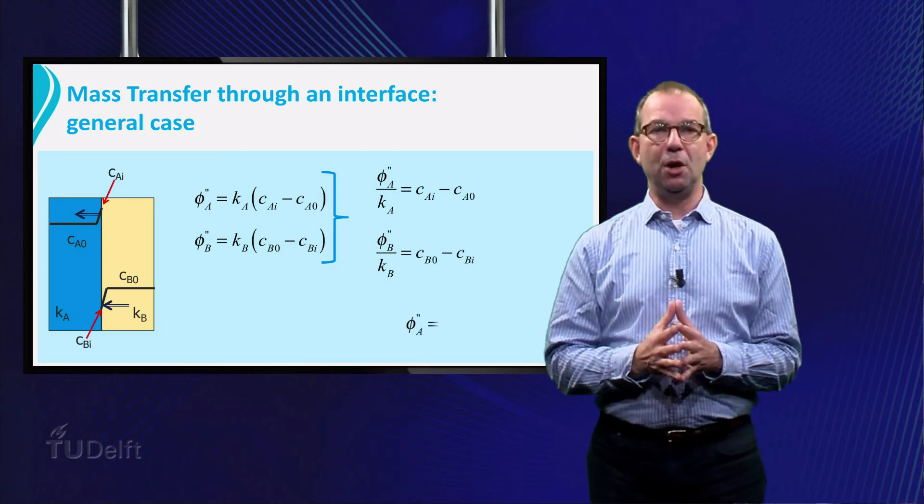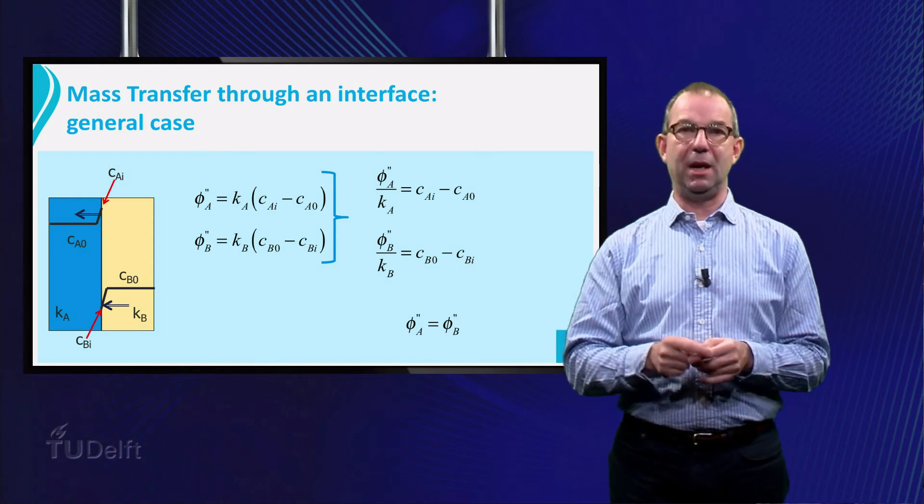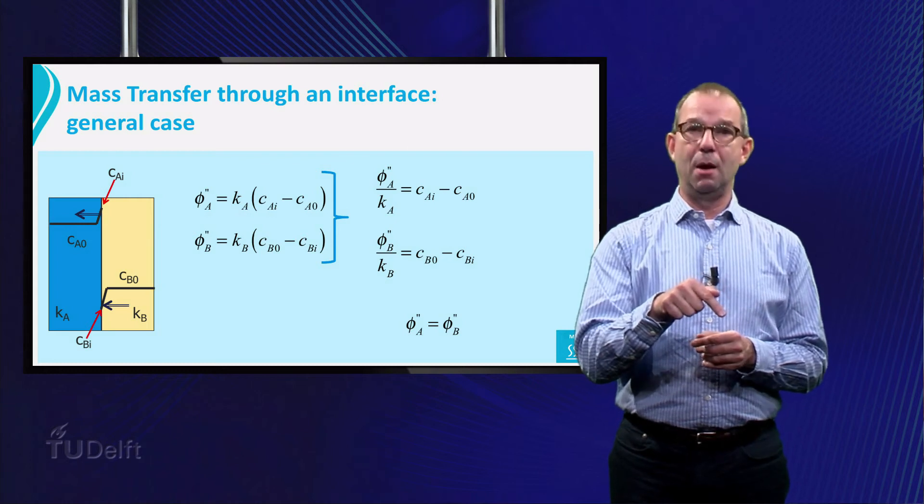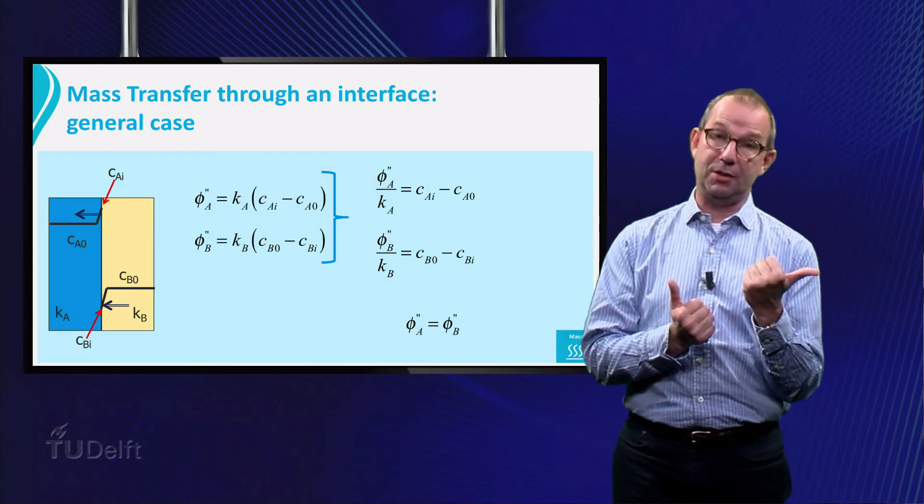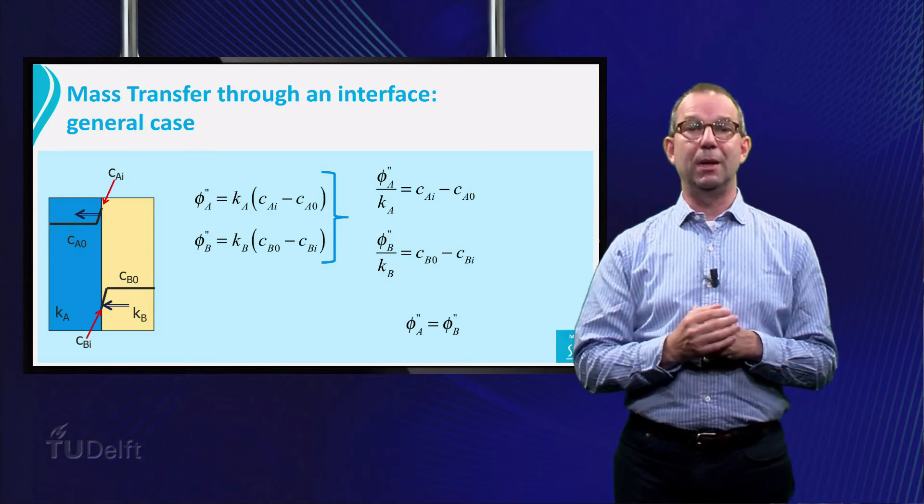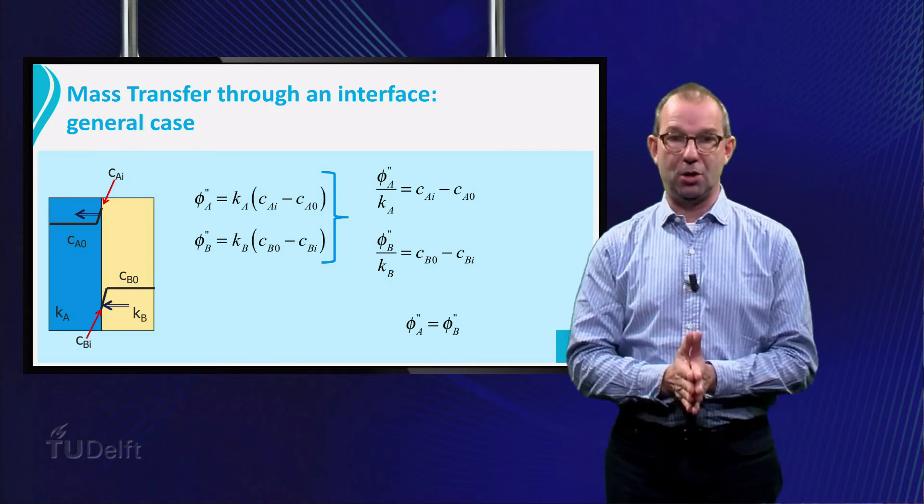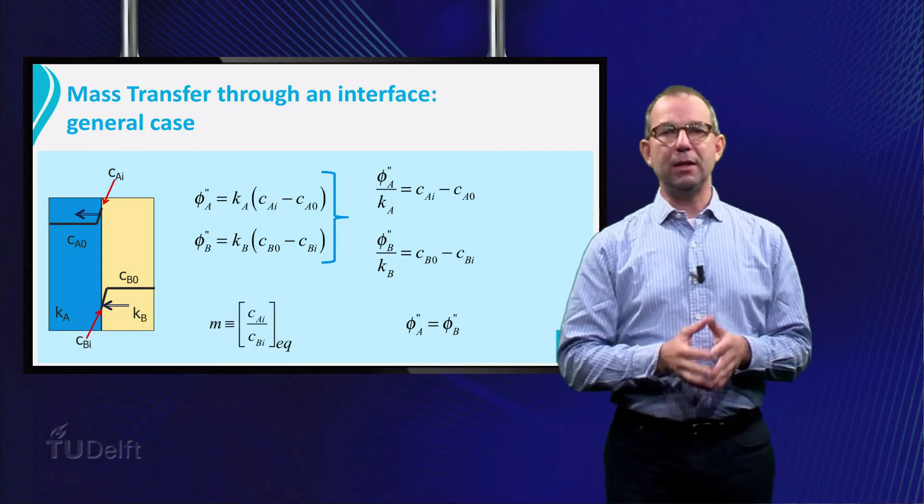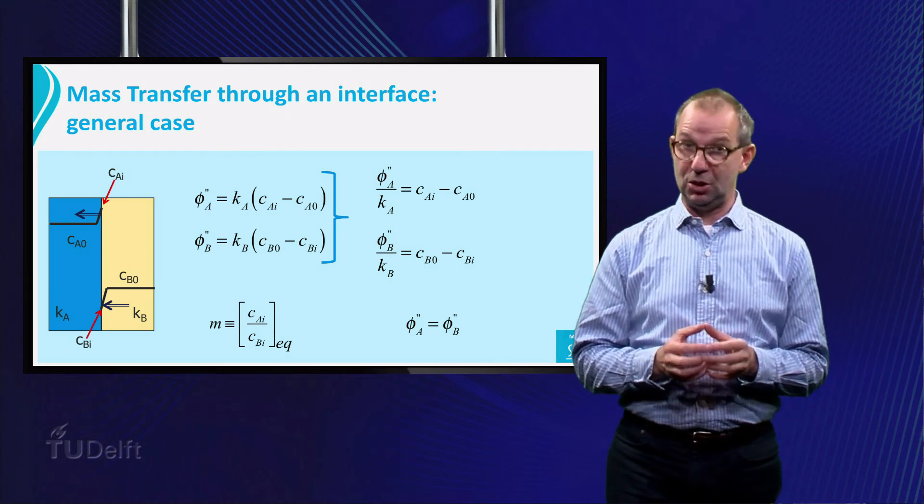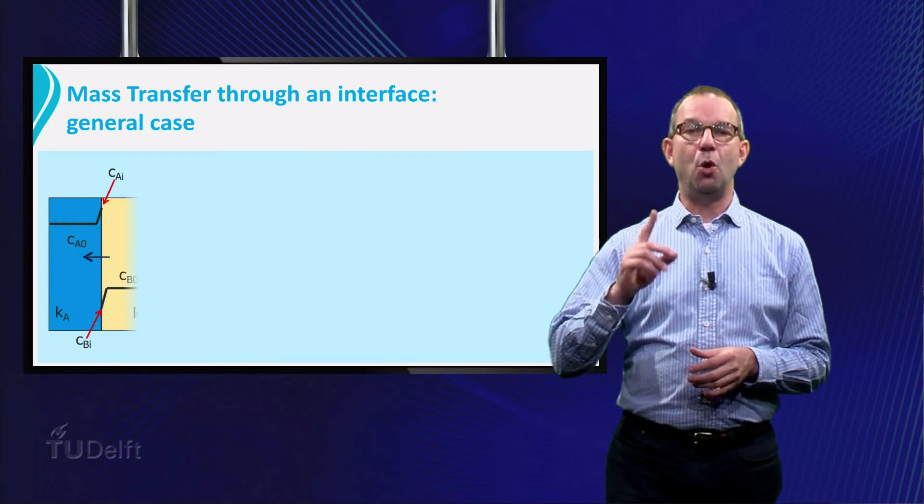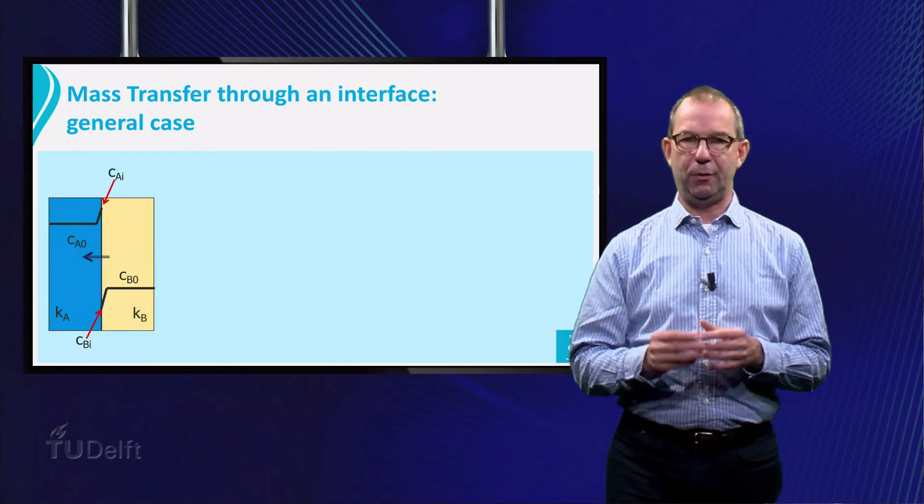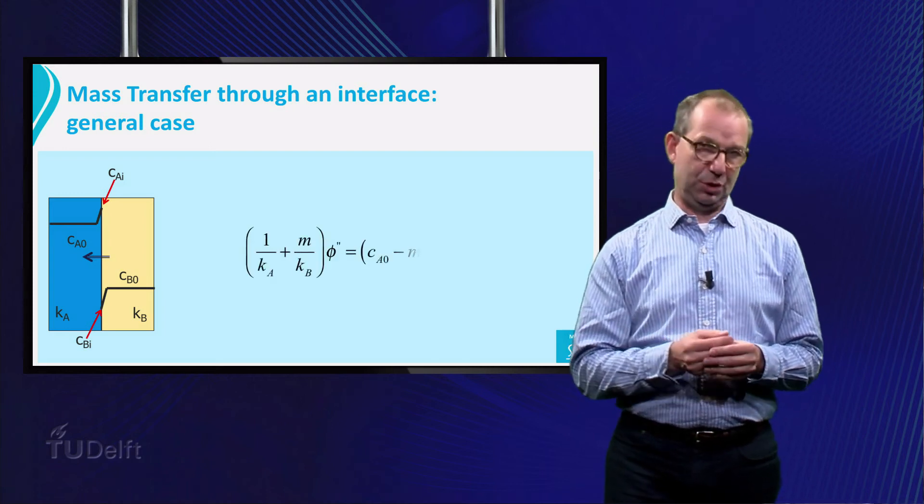Furthermore, we know that both fluxes must be the same as everything that flows to the interface from the B side must continue and flow into the A side. Argument? An interface has zero volume and cannot store any mass. Finally, the interface concentrations have jumped to the ratio given by the partition coefficient. If we use all these equations, we can write the mass flux from phase B to phase A as shown on the sheet.